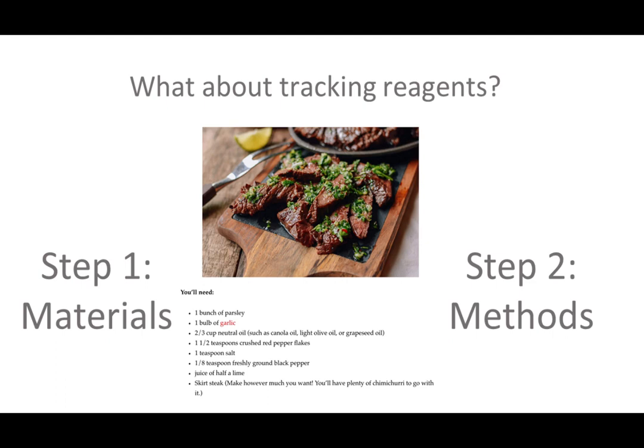Now we're going to talk about reagents — still in the scope of keeping track of different stuff. The way I like to think about every scientific paper is as a recipe, and reagents are really your ingredients. Just like parsley, garlic, natural oil, and crushed pepper are ingredients in a recipe, the first step of making a recipe is figuring out what stuff you need — those are the reagents — and then figuring out how to put it together to make a beautiful dish.